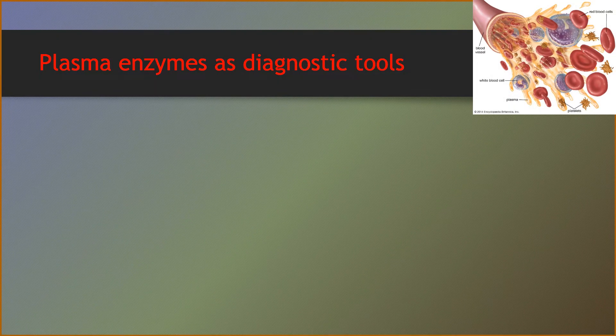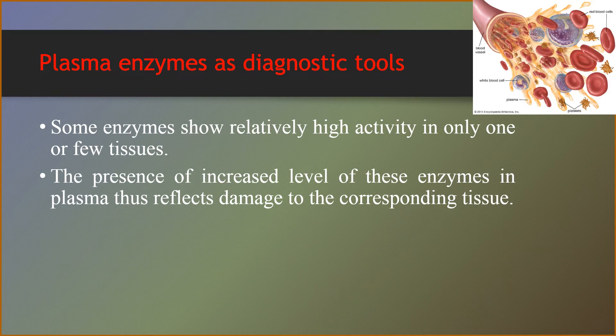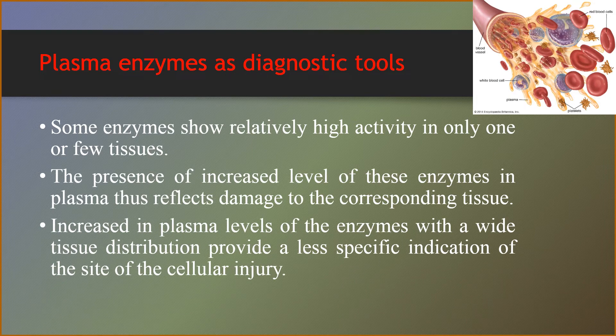Plasma enzymes as diagnostic tools: some enzymes show relatively high activity in only one or a few tissues. The presence of increased levels of these enzymes in plasma does reflect damage to the corresponding tissue. For example, the enzyme alanine aminotransferase is abundant in the liver, and the appearance of elevated levels of alanine aminotransferase in plasma signals possible damage to the hepatic tissue. An increase in plasma levels of an enzyme with a wide tissue distribution provides a less specific indication of the site of cellular injury, which limits the diagnostic value of many plasma enzymes.